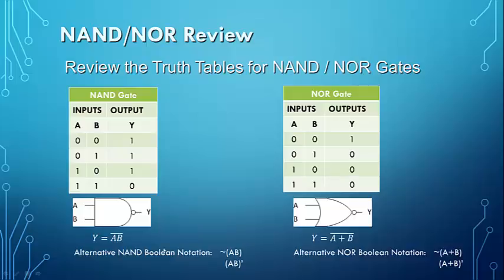Remember, it is very important that the inversion bar be over the entire product for a NAND gate and over the entire sum for a NOR gate. The reason for that is that A and B NANDed together is not the same as NOT A ANDed with NOT B. Similarly, A and B NORed together is not the same as NOT A ORed with NOT B. De Morgan's Theorems show us that those are actually opposite. Make sure that when NANDing and NORing, the inversion bar is over the entire product for the NAND gate or over the entire sum for the NOR gate.